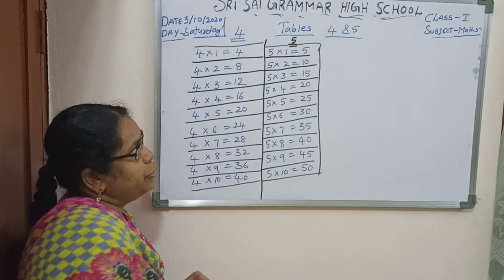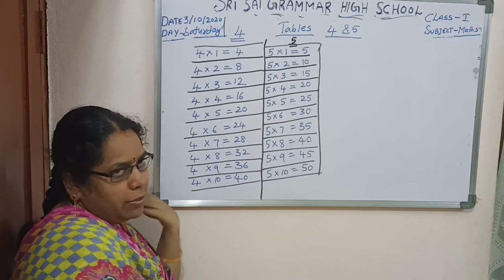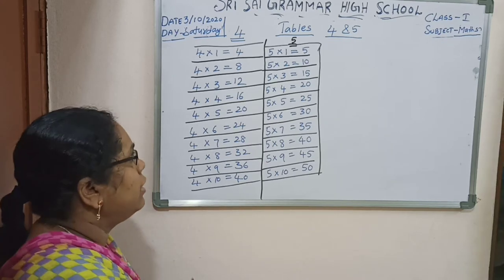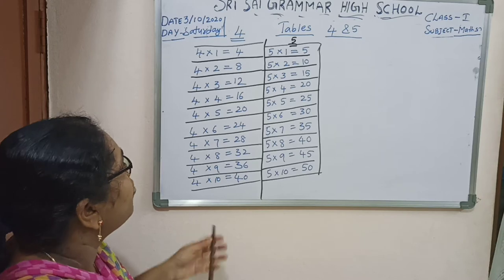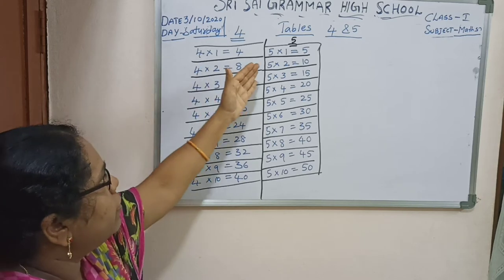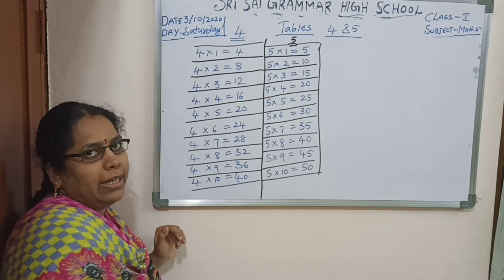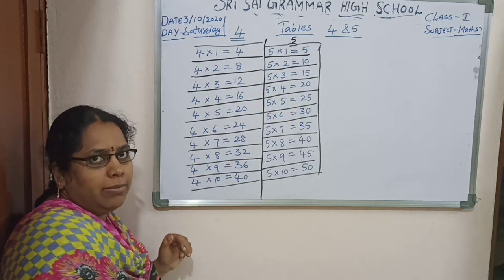Everyone should learn tables — very, very important tables. 4 and 5. First, 4 tables. Look at the board. Read with me, children.